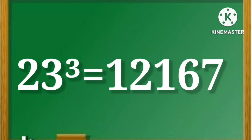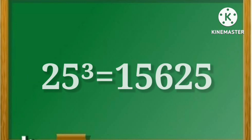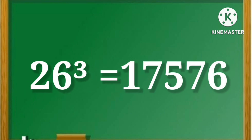23 cube is equal to 12167. 24 cube is equal to 13824. 25 cube is equal to 15625. 26 cube is equal to 17576.